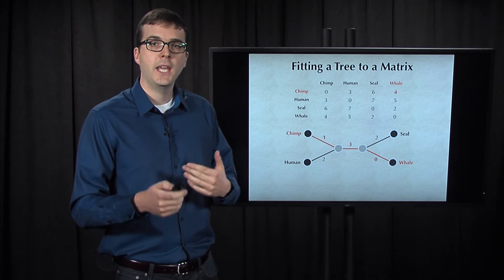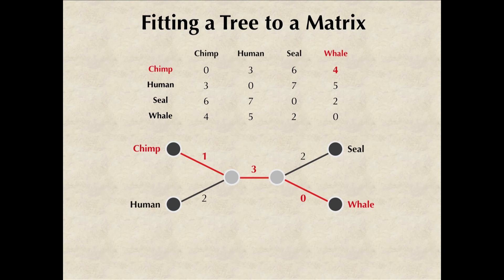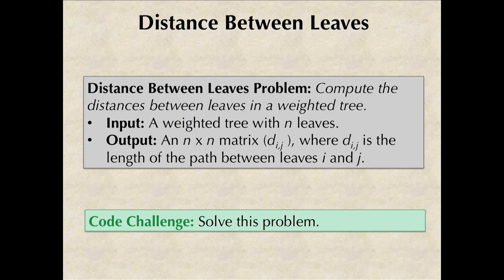You can verify that each possible path through this tree, if you add up the weights of the edges along the path, that gives you the distance matrix value. Now we will use lower case d to indicate the distance between leaves in a tree. If you're given a tree whose edges are weighted, then it's a pretty straightforward problem to just compute the distances between each pair of leaves in that tree.